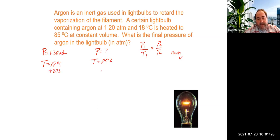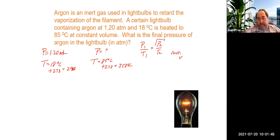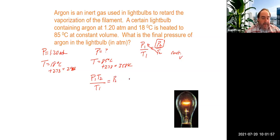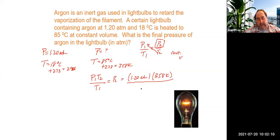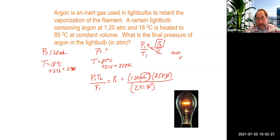We need to convert temperatures to Kelvin by adding 273, giving us 291 Kelvin and 358 Kelvin. We are solving for P2, so we rearrange to get P1 times T2 divided by T1 equals P2. Plugging in: 1.2 atmospheres times 358 Kelvin divided by 291 Kelvin. The Kelvins cancel, leaving atmospheres. That gives us 1.48 atmospheres.